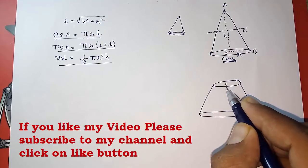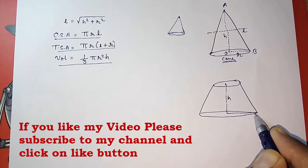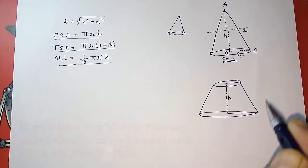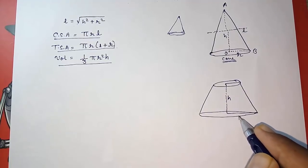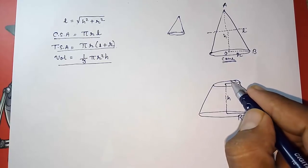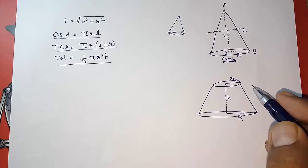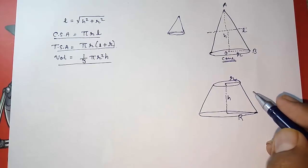Now here, again you will get the same thing, this will be your height, but here you will get two radius - on the upper part also you will get radius and in the lower part. Take the bigger one as capital R, the smaller one as small r, and the slant height as L.